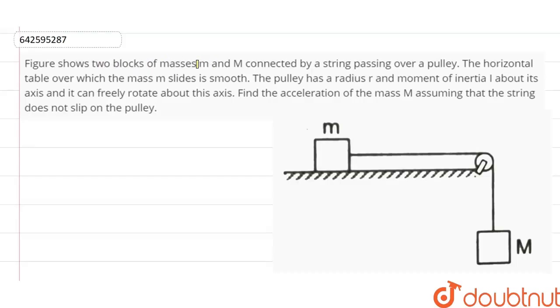Figure shows two blocks of masses small m and capital M connected by a string passing over a pulley. The horizontal table over which the mass small m slides is smooth. The pulley has a radius small r and moment of inertia I about its axis and can freely rotate about this axis. Find the acceleration of the mass capital M assuming that the string does not slip on the pulley.